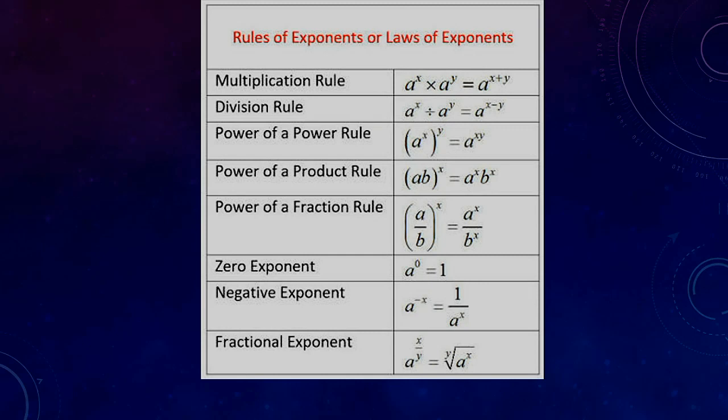The power of a power rule. a to the power x or to the power y. It's quite simple. Just a to the power x times y. So had it been a to the power a to the power b to the power c to the power d, it would be a to the power a times b times c times d.